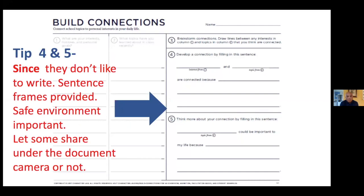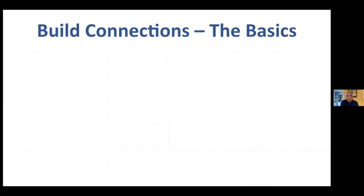Another tip is to provide a safe environment — some kids think their hobbies are embarrassing or nerdy, so don't force sharing. But do offer the opportunity, and try to share some student connections on screen, because students sharing often helps others see their own connections. They might say, 'Oh, I like to skateboard too — I never thought about that connection.' Giving a chance to share is essential.